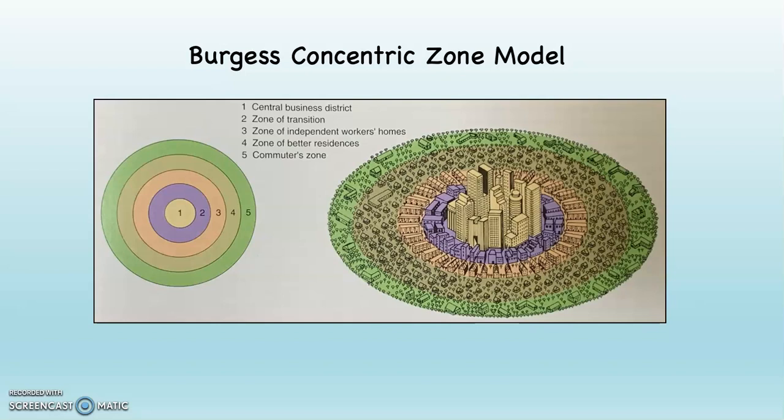Rings or zones form concentric circles around each other. Each zone has unique characteristics. Zone number one is the CBD, the Central Business District — the center of the city, with the highest land values in the model. This is where the tertiary, or service, sector is centered. Because it's at the center of the landscape, it can draw workers from all directions, and transportation networks converge here. According to the model, there are very few residences here. The buildings are the tallest in this part of the city, and this is likely the oldest part of the city. Actual population density is low because of the lack of residences.